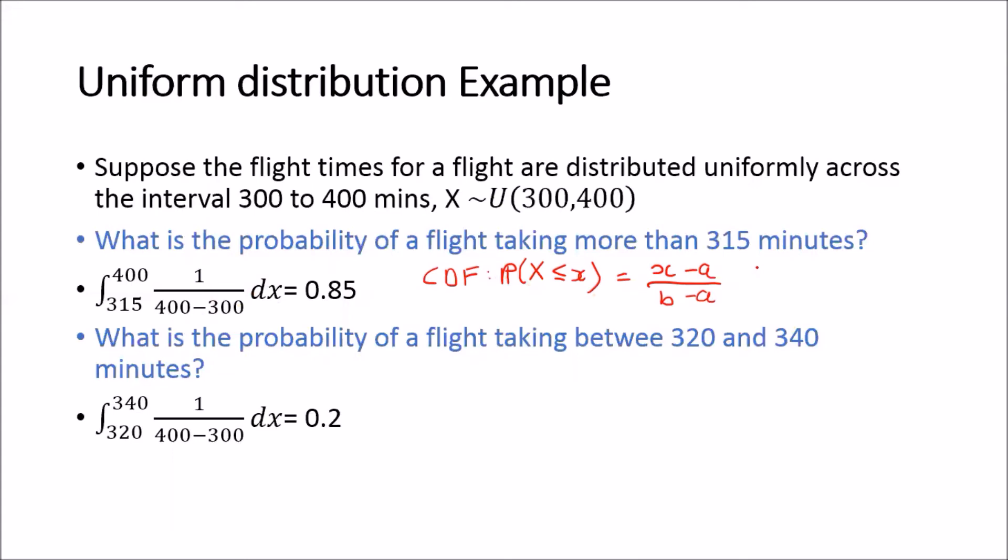This is equal to (x-a)/(b-a). And we can use this as well to calculate this. All we need to do is we would need to say it's going to be 1 minus the probability that is less than or equal to this. So it's 1 minus (315-300)/100, because this is 400-300. And then we see this is 1 minus 0.15, which is equal to 0.85. So we can use the results that we've derived already to calculate this, or I've shown this integral for you to show you how you would go about doing the whole thing if you have forgotten the CDF.